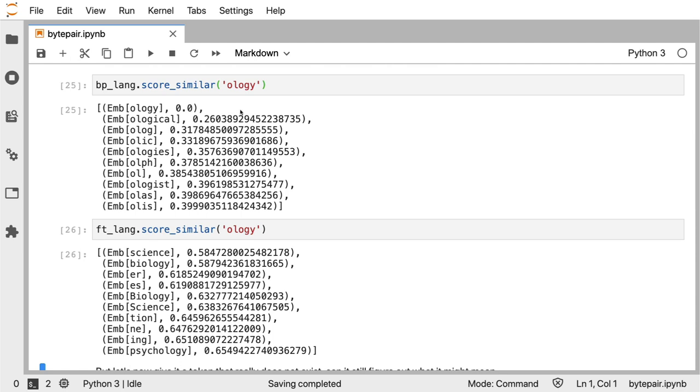And it does look like there are some differences. The byte pair embedding looks at this ology and recognizes that it is the ending of a word probably having to do with some sort of science. So we get these word endings that are the most similar.